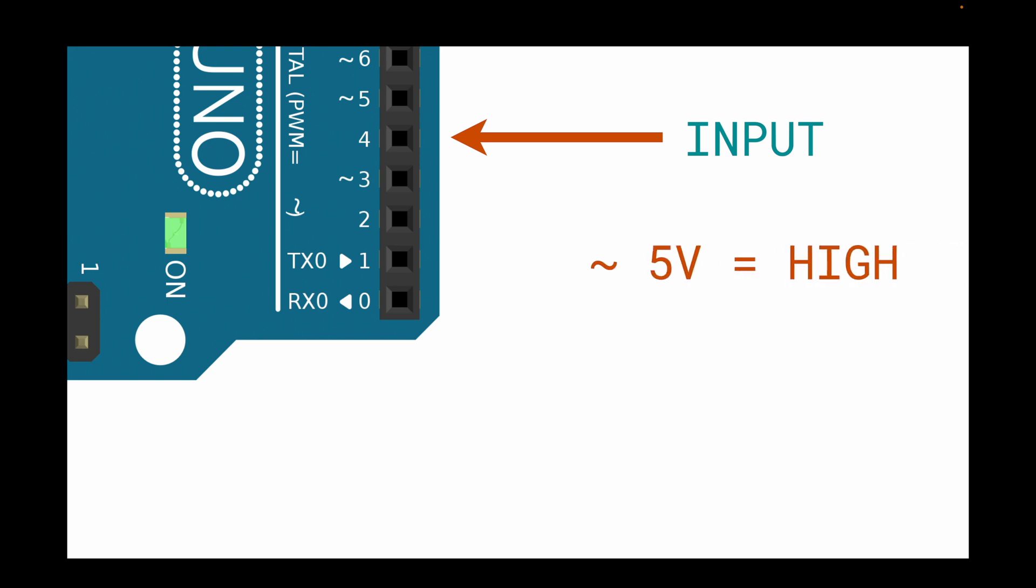If approximately five volts are connected to pin 4, Arduino will detect a high signal. And if approximately zero volts are connected to pin 4, Arduino will detect a low signal.